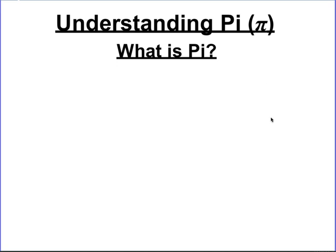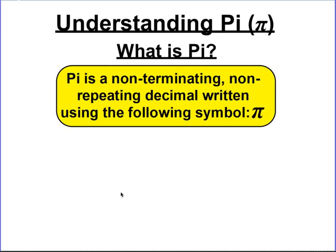We need to understand what pi is before we start doing calculations for circles. So what is pi? Well, pi is a non-terminating, non-repeating decimal. Non-terminating means it does not end. Non-repeating means it doesn't repeat. So pi goes on forever and doesn't have a pattern to it. The symbol that we use for pi in math is this Greek symbol here, pi. It is a Greek letter. So that symbol is what you're going to see in all of your formulas when you're supposed to use the number pi.